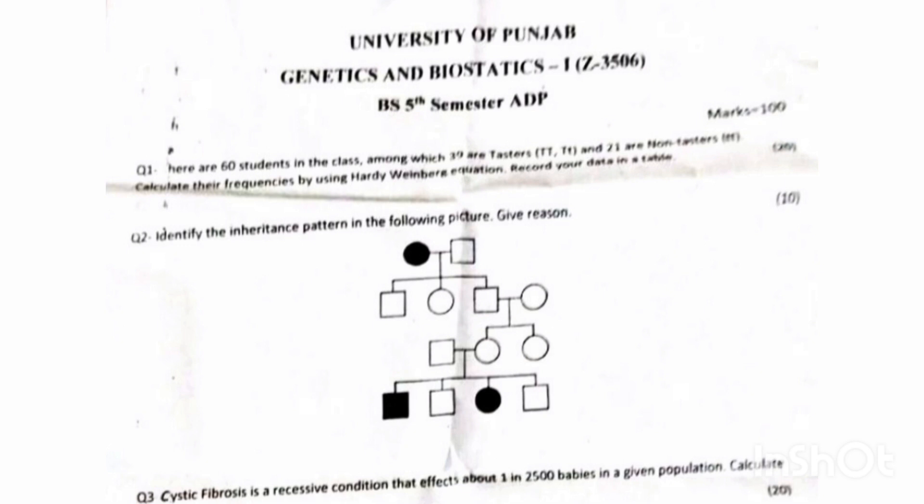Question number 1: There are 60 students in the class, among which 39 are tasters and 21 are non-tasters. Calculate their frequencies by using the Hardy-Weinberg equation and record your data in a table.